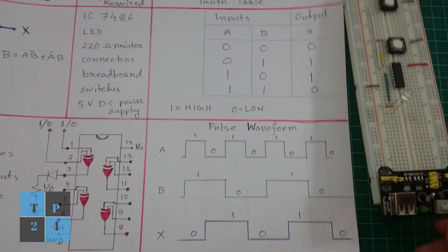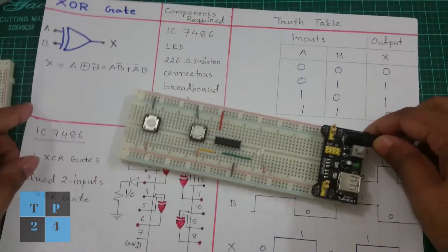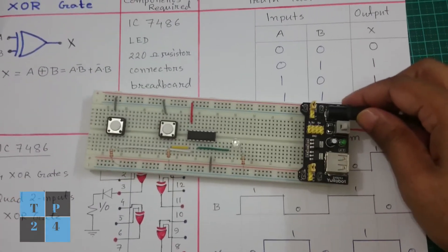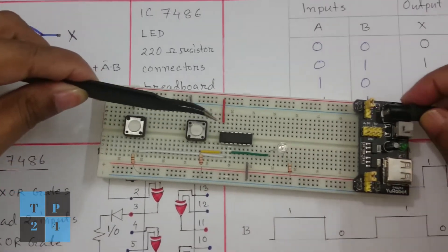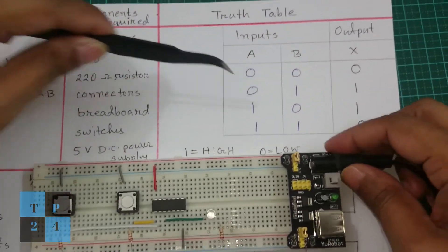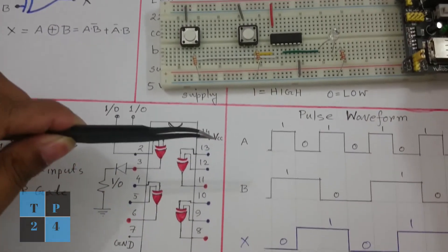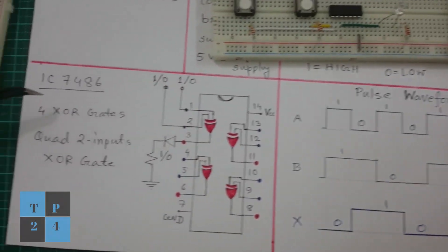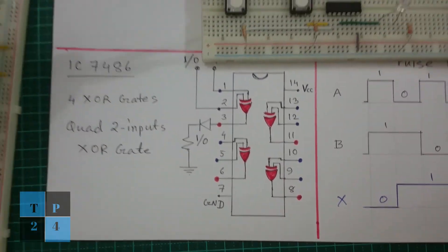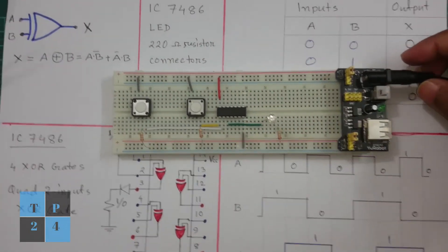So in this tutorial I explained the XOR gate and the IC and the truth table and also finally I explained the pulse waveform and also I explained the IC 7486 and its pin diagram. I hope this tutorial was informative for you.